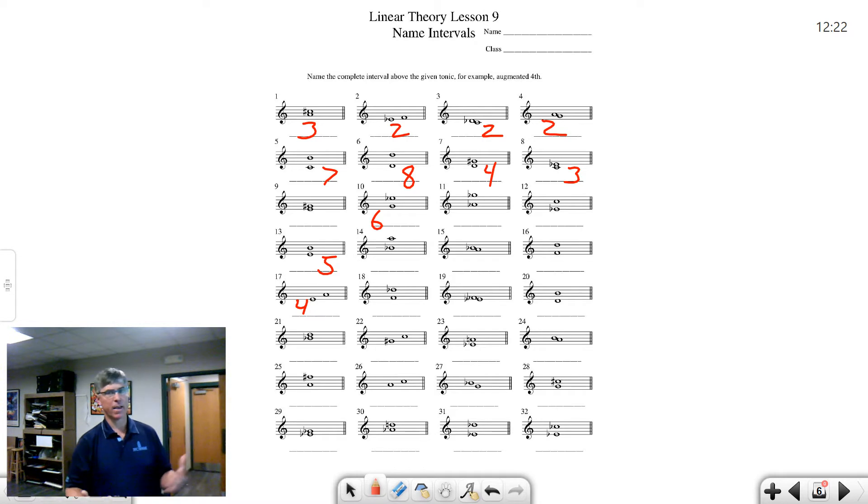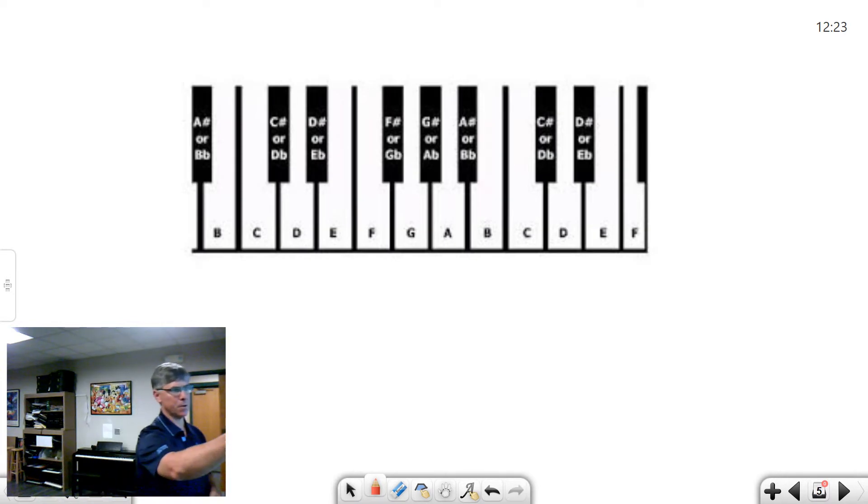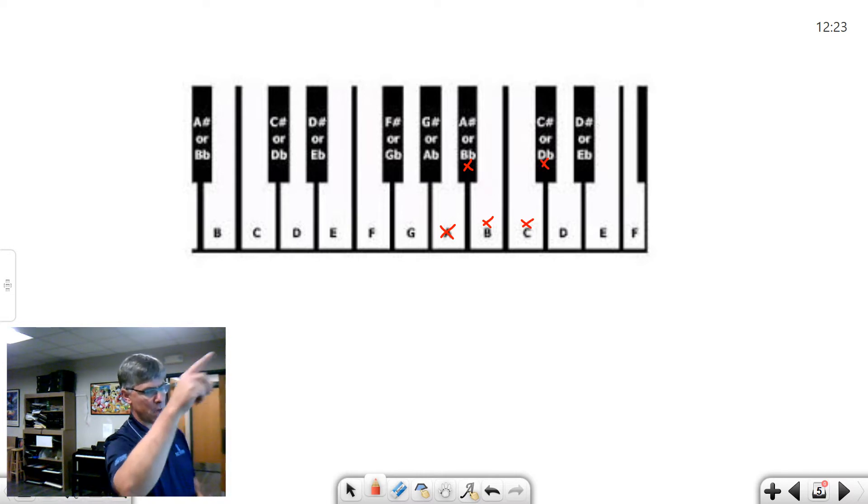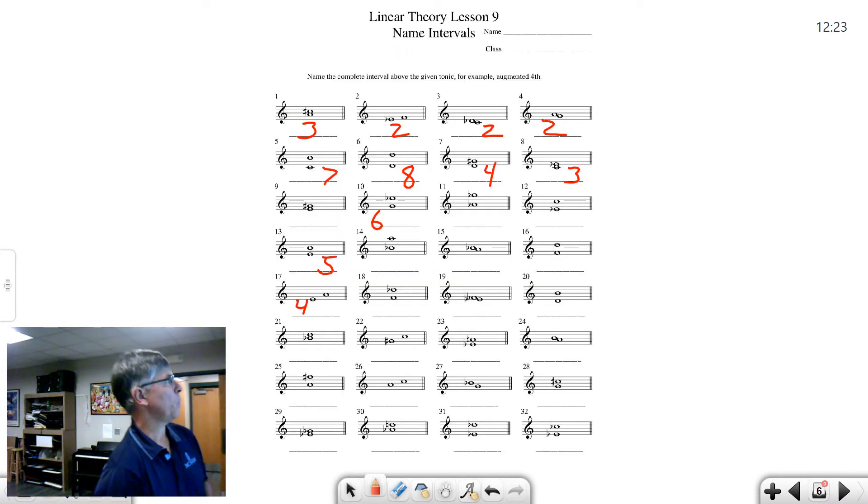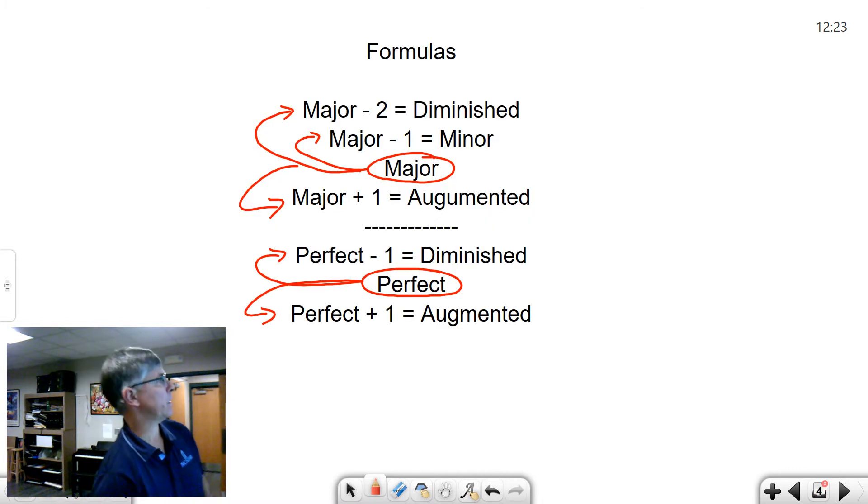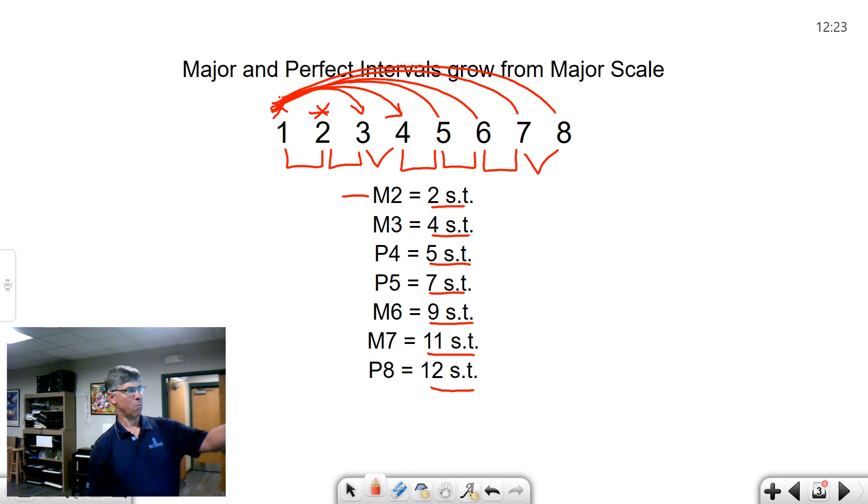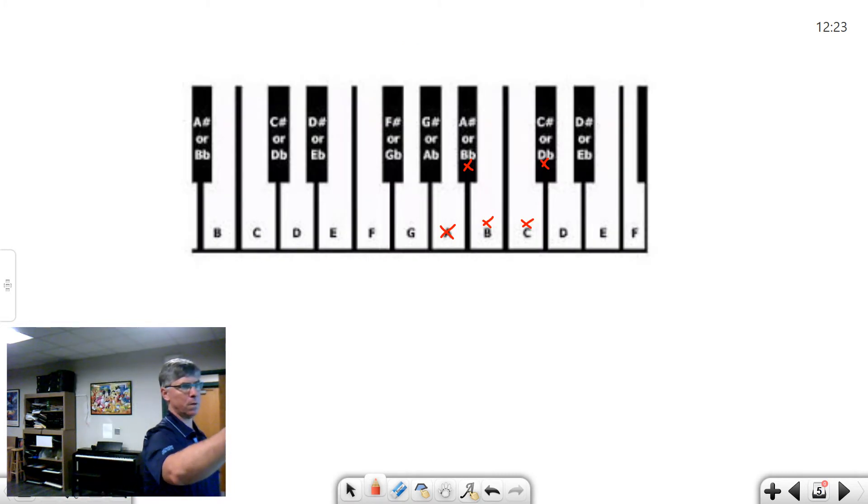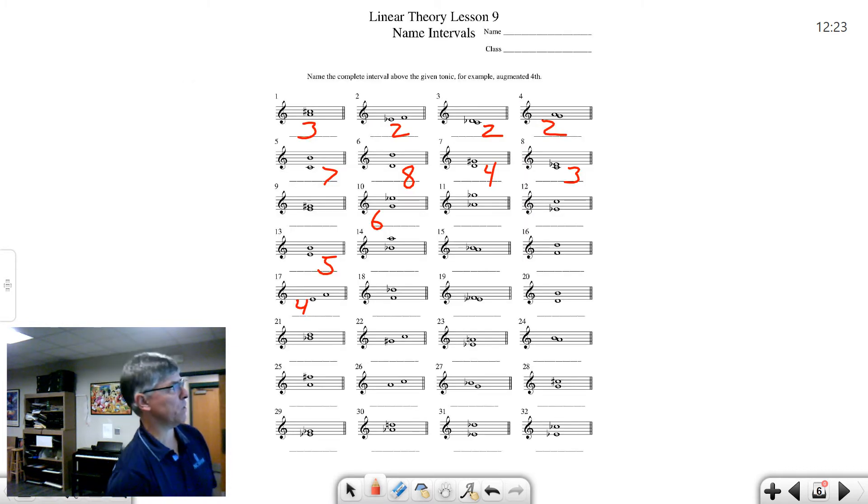Once we've done that, now we want to go back and count half steps. Let's take a look back at number one. Here we have an A to a C sharp. Let's go to a keyboard. Here's our A. We're going to count the half steps to C sharp: one, two, three, four. It's four half steps from A to C sharp. We know we've got some kind of third going here. Our major third is four semitones or four half steps. And I believe we said one, two, three, four here. As a result, we know that the first example is a major third.